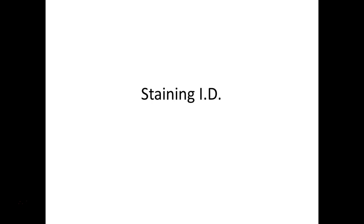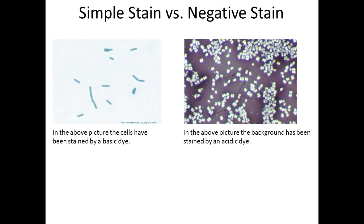One of the key things you need to be able to do is identify stains — which one is a simple stain and which one is a negative stain. The negative has the dark background, so the title matches up. The simple stain has the cells colored. So: background colored and cells not stained for negative staining; background not colored and cells colored for simple staining.